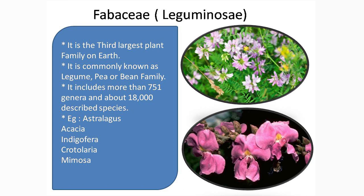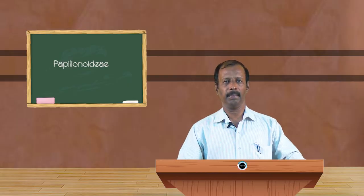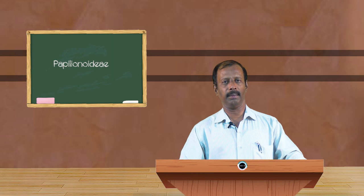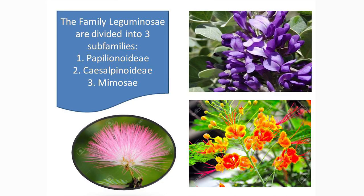The three sub-families are Papilionidae, Caesalpinioideae, and Mimosoideae. In this session, I am going to deal with Papilionidae. Papilionidae is the sub-family having some of the most valuable plants, including plants that yield pulses, vegetables, timbers, and oil. It has an enormous number of plants and all these plants find the widest application.